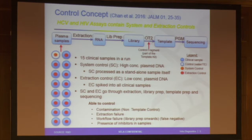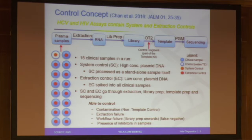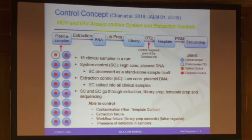The other thing we spent a lot of effort on is the control concept. For single gene detection, quality control is straightforward, but this is not the same for NGS — there is no uniform control system, so we had to develop our own. That is described in detail in a publication by Chen and co-workers published in August this year in the Journal of Applied Laboratory Medicine by AACC. We use color codes: clinical samples in blue, control water in white, system control and extraction control in orange or red. Per run we use 15 clinical samples plus one system control.